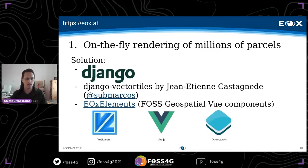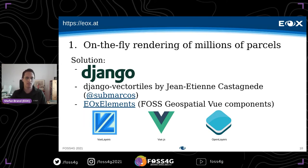For the back end we are using Django, and in particular the extension Django Vector Tiles by Shoaitian Castagnet. It allows us to leverage the ST_AsMVT function of PostGIS from Django. For the front end we are using our own EOX Elements — a repository you can find on GitHub for geospatial UI components — which uses VueLayers, the Vue adaptation of OpenLayers. You can even use EOX Elements for your own projects.